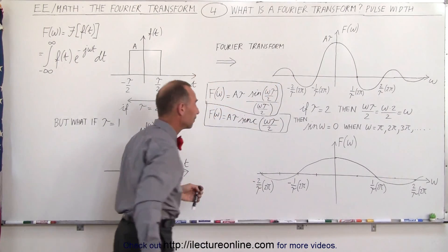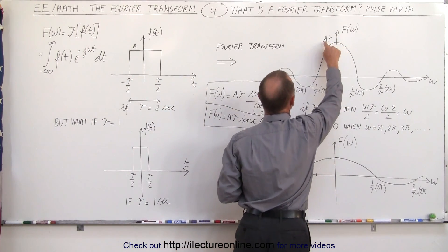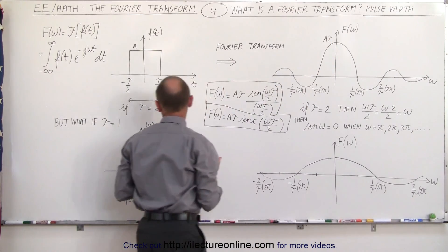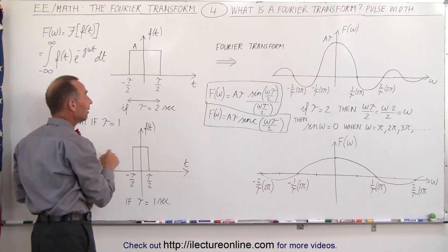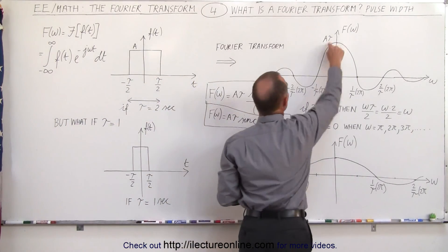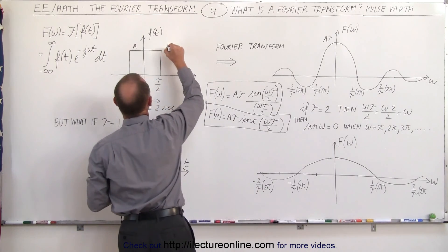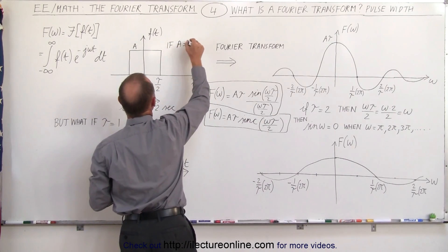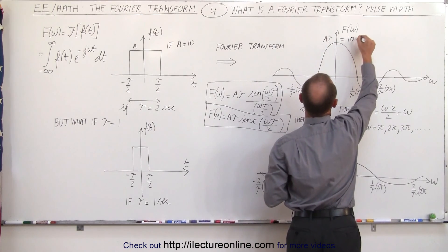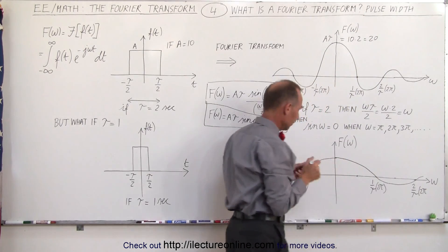The amplitude of the central maximum here is the amplitude of the function A times tau. In this example, just like we previously did, we set tau equals 2 seconds, which means the amplitude will be A times 2. If we set A equals 10, then A times tau equals 10 times 2, which equals 20. That will be the amplitude of our frequency function.